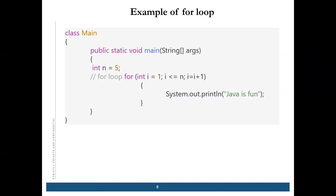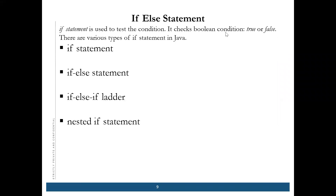This is the for loop. Moving ahead, we have the if-else statement. There are four types: only if statement, if-else statement, if-else-if ladder, and nested if.